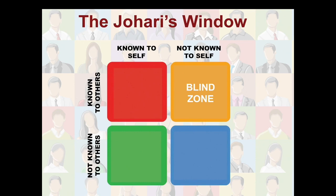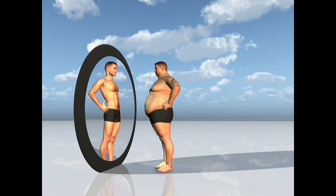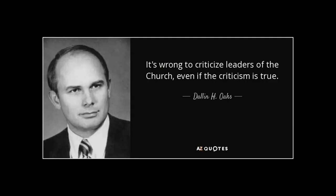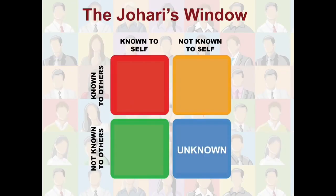Quadrant three is made up of those things that are known to other people but not known to us — none of us see ourselves exactly as others see us. Robbie Burns, the great bard, said: 'O wad some power the gift to gie us, to see ourselves as others see us.' Higher up the hierarchy one rises in the Mormon church, the less likely it is that one will be given constructive feedback by those below. Elder Oaks even codified it: 'It is wrong to criticize leaders of the church, even if the criticism is true.' Quadrant four is made up of those things that are neither known by us nor by other people, yet they exist and influence our behavior in profound ways. This is the subconscious and certainly beyond the scope of this discussion.